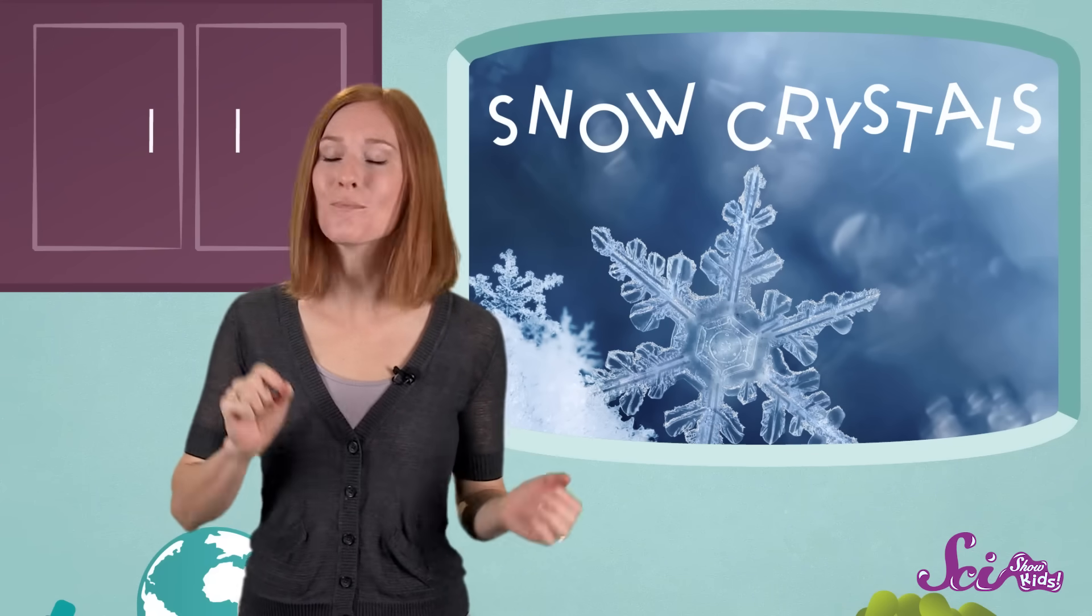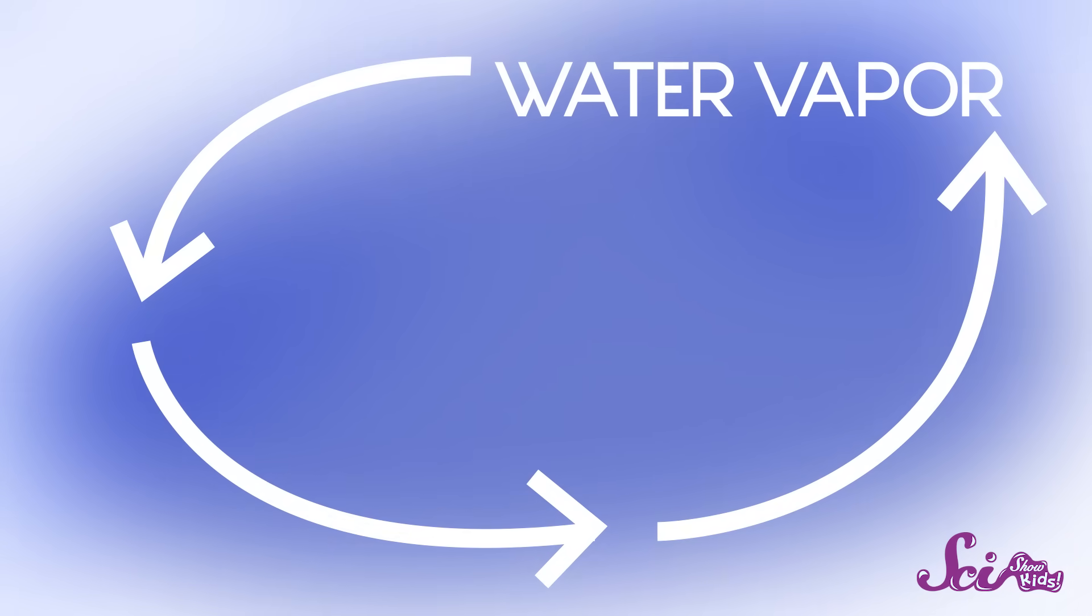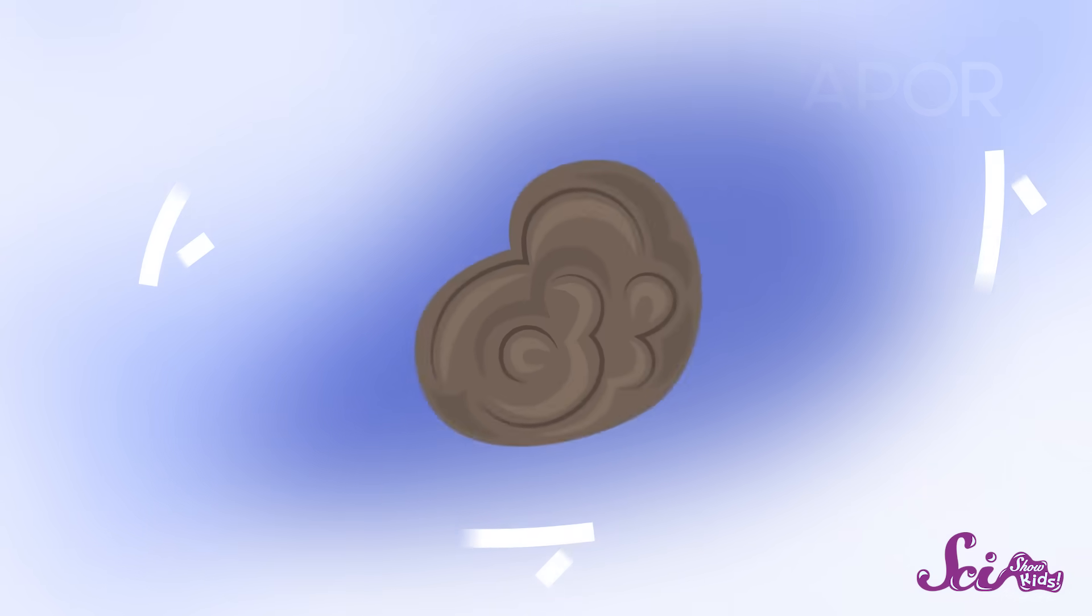And the journey of a snow crystal begins in a cloud. Up there, water in the form of gas, called water vapor, freezes around a piece of dust or pollen that's just floating around in the cloud. This forms what's called a seed crystal.